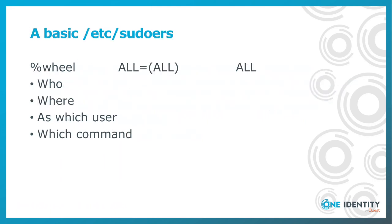Here you can see a very basic sudoers file on the screen. You see a single rule — it's the most typical setting. Members of the wheel group can do practically anything on your system. The columns of the configuration define who can do what, on which hosts, as which user, and which commands are allowed. Even this very simple configuration is useful, as you can see in your logs which user does what on your system.